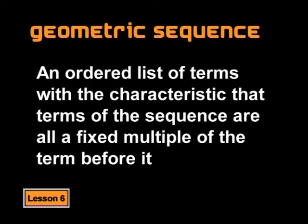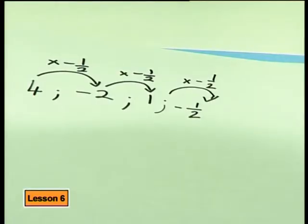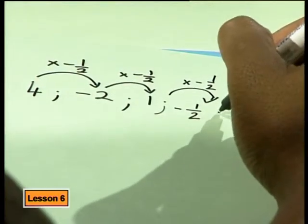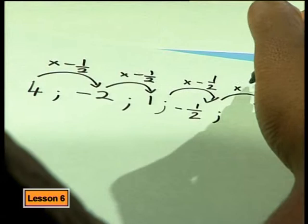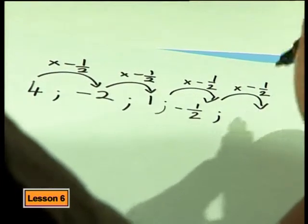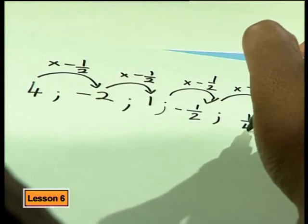In our previous lesson we explored a series called a geometric series. A geometric sequence is an ordered list of terms with the characteristic that terms of the sequence are all a fixed multiple of the term before. We worked out that to get from 4 to negative 2 we needed to multiply by negative one half, and similarly from negative 2 to 1, determining all terms this way.